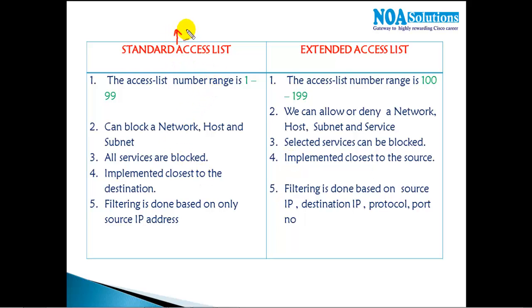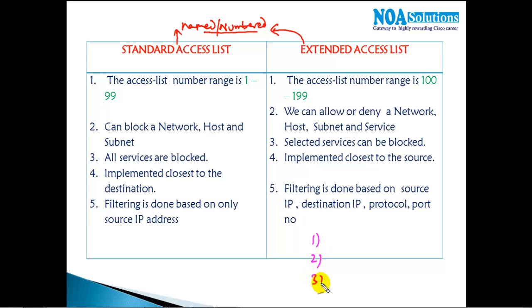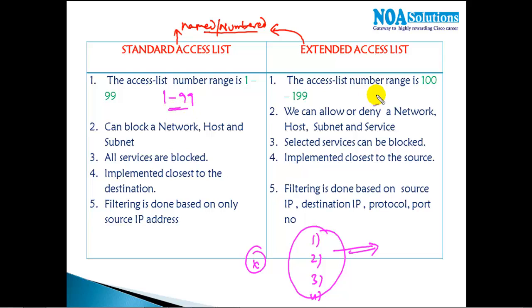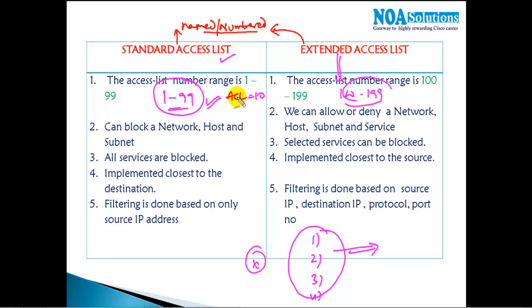A standard ACL can be either named or numbered — that doesn't matter. When using numbers, if you give any number between 1 and 99, the router automatically understands it is a standard ACL. If you give a number between 100 and 199, the router understands it is an extended ACL. By just seeing the number range, the router identifies the type — no need to explicitly declare it.